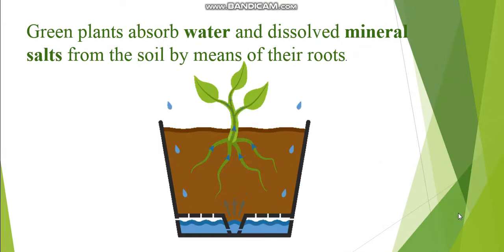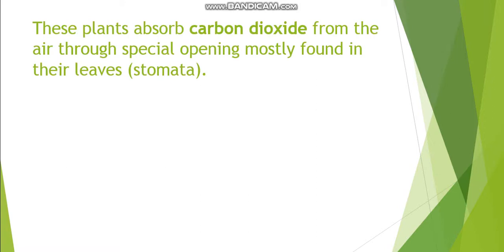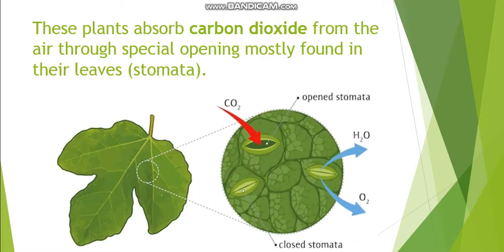Green plants absorb water and dissolved mineral salts from the soil by means of their roots. These plants absorb carbon dioxide from the air through special openings mostly found in their leaves' stomata.